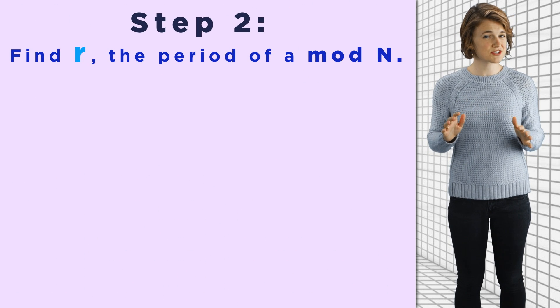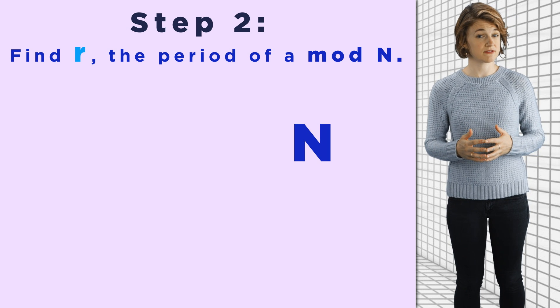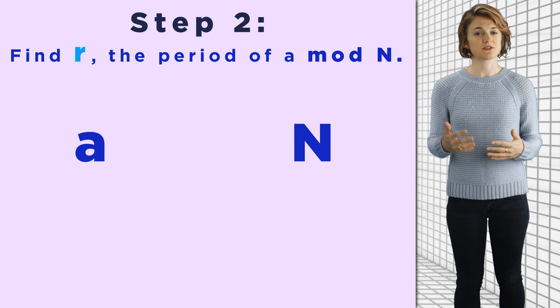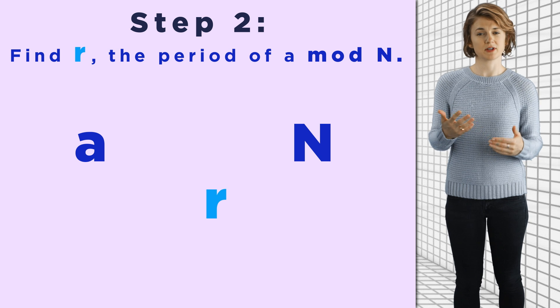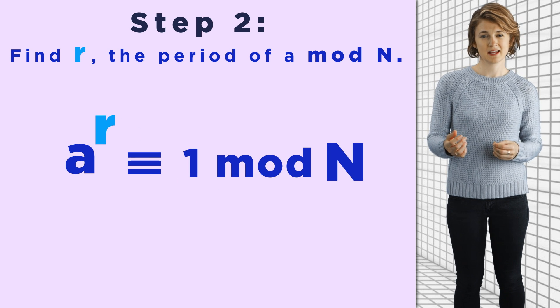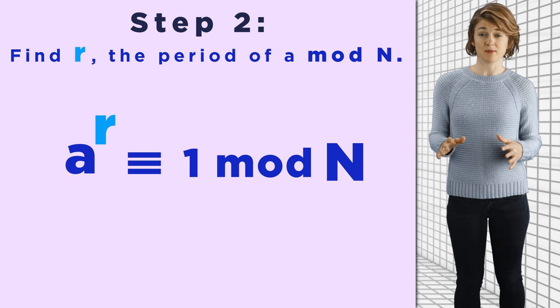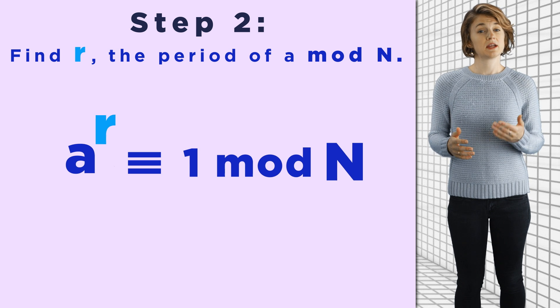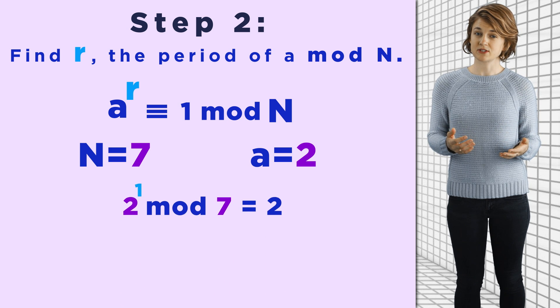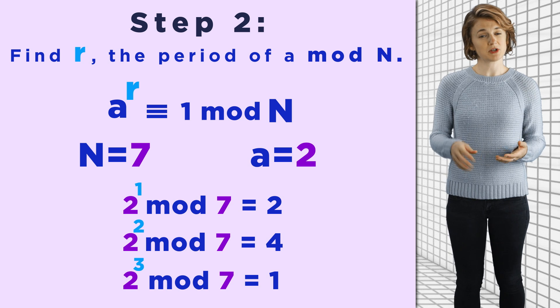But step two is the obnoxiously long step. Remember, n is the number we're trying to find the factors of and a is a selected number smaller than n. We're trying to find the smallest number r, which we call the period, such that a to the r is congruent to 1 mod n. It's pretty easy to find the period of a small example just by checking the powers of a mod n until we get 1. So if n is equal to 7 and a is equal to 2, we compute 2 to the 1 mod 7 is 2, 2 to the 2 mod 7 is 4, and 2 to the 3 mod 7 is 1. So the period is 3.